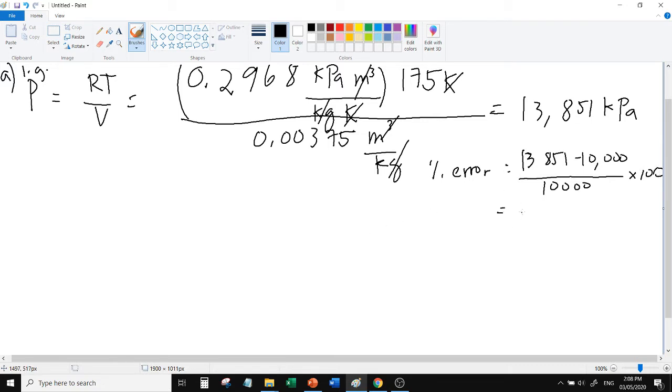Let's compute for the percent error. Percent error as compared with the experimental value: 13,851 minus 10,000 the experimental value over 10,000 times 100 equals 38.5 percent. That's large, 38.5 percent error.